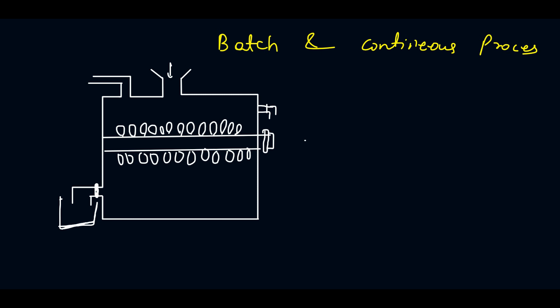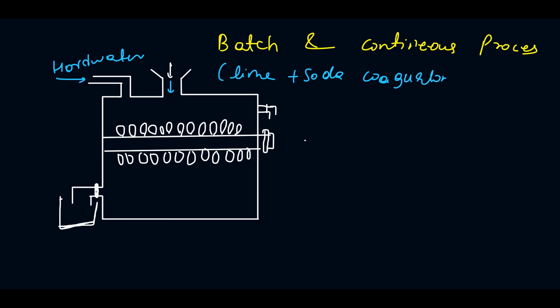In the batch process, hard water is entered from here. Chemicals like lime, soda, and coagulant are added from here. This is the stirrer that continuously stirs the water. After some time, the precipitate is formed and settles down.